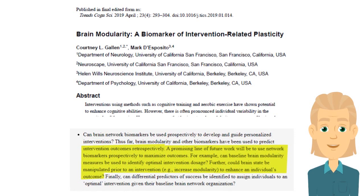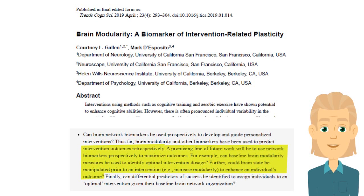In this 2019 review of the brain modularity hypothesis for effective brain training, the authors formulate the current state of play. To quote: a promising line of future work will be to use network biomarkers to maximize outcomes. For example, can baseline brain modularity measures be used to identify optimal intervention dosage? Further, could brain states be manipulated to increase modularity prior to an intervention to enhance an individual's outcome?